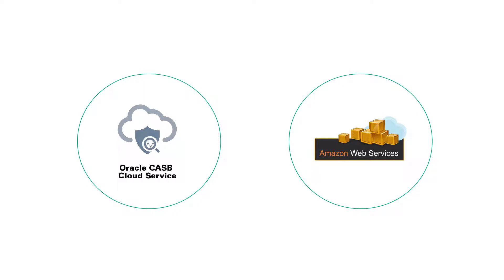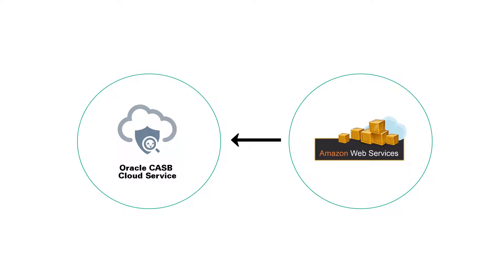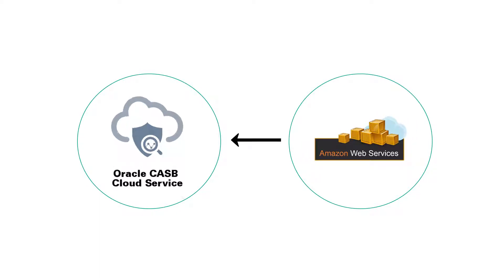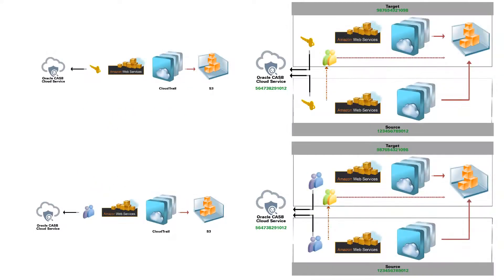There are multiple ways to configure Amazon Web Services to be monitored by Oracle CASB Cloud Service. This video outlines the instructions required for your particular architecture and configuration.